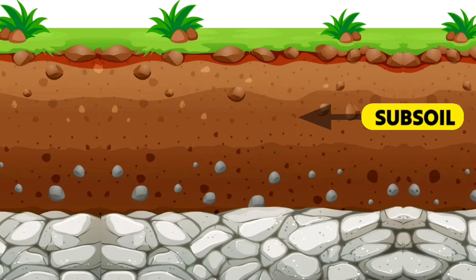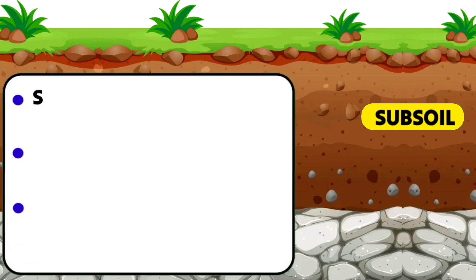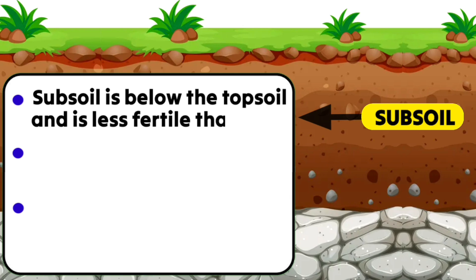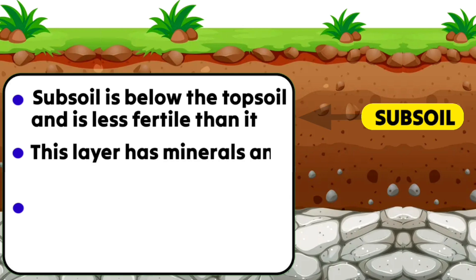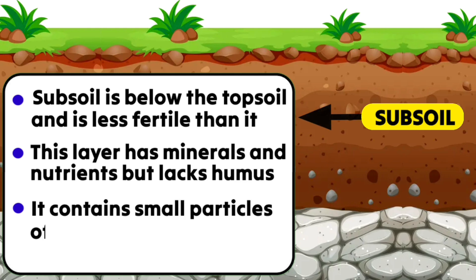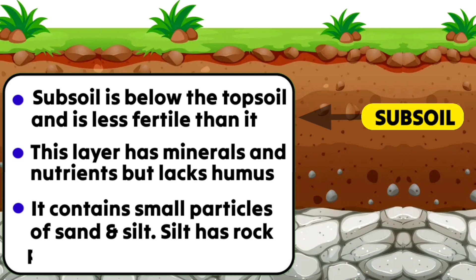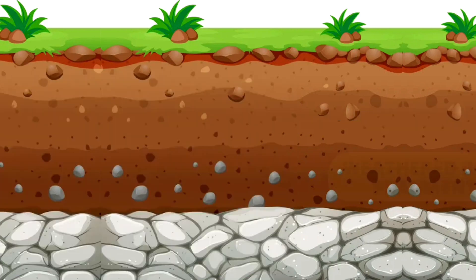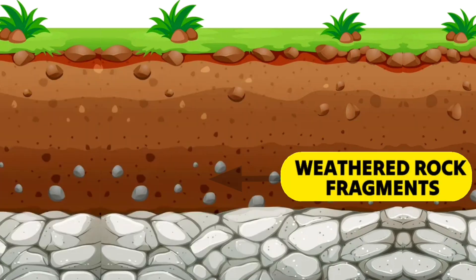The second layer is subsoil. Subsoil is just below the topsoil and is less fertile. This layer has minerals and nutrients but lacks humus. It contains small particles of sand and silt, where silt has rock particles bigger than sand.